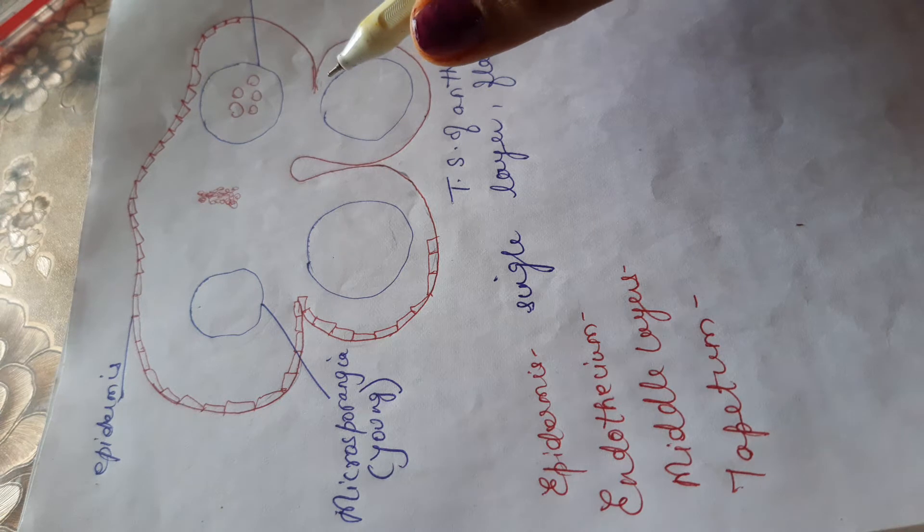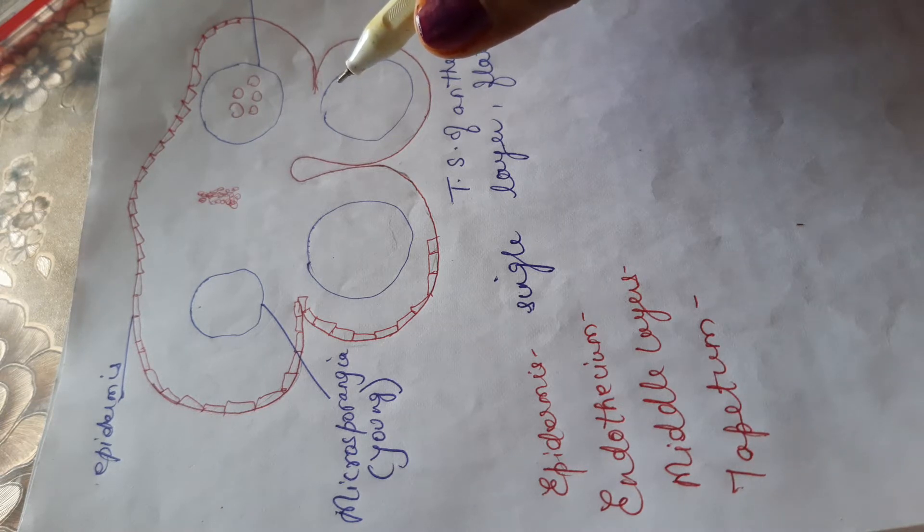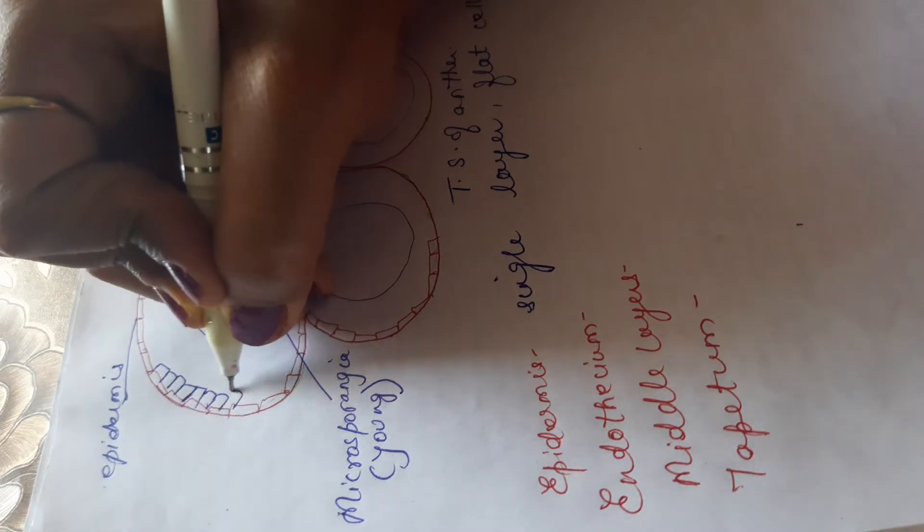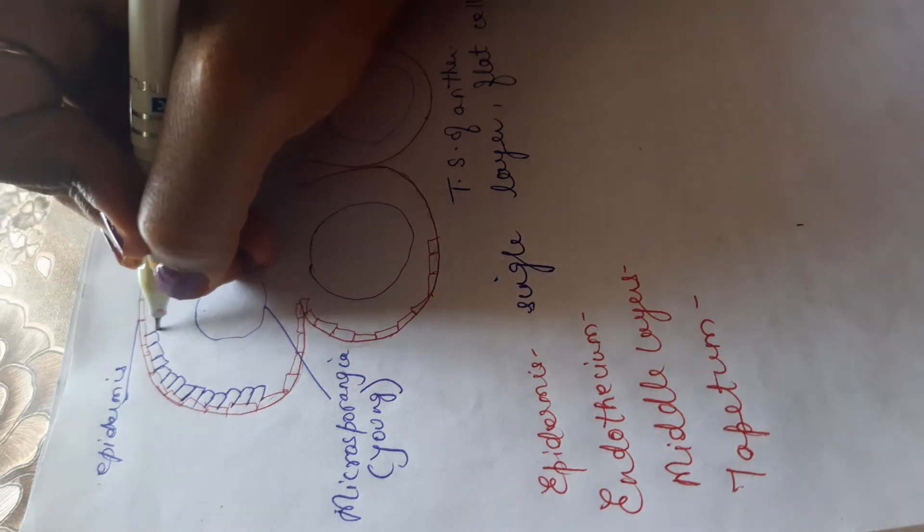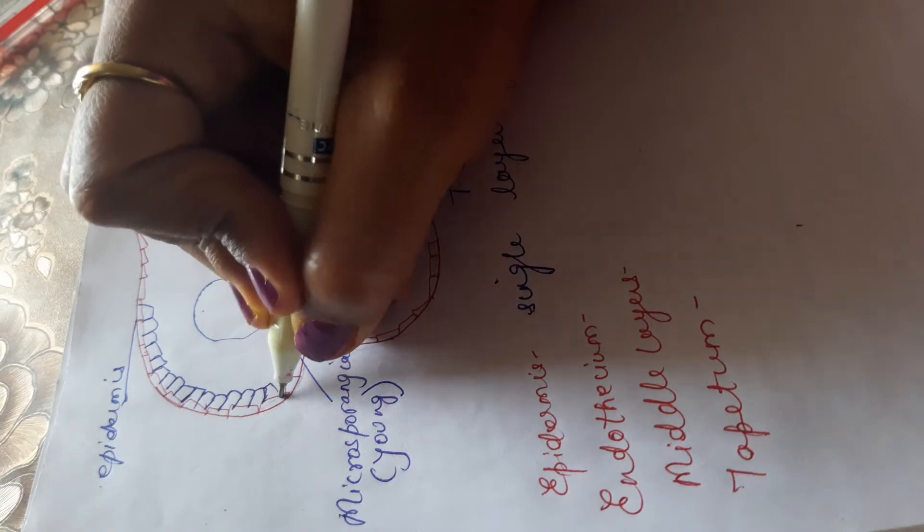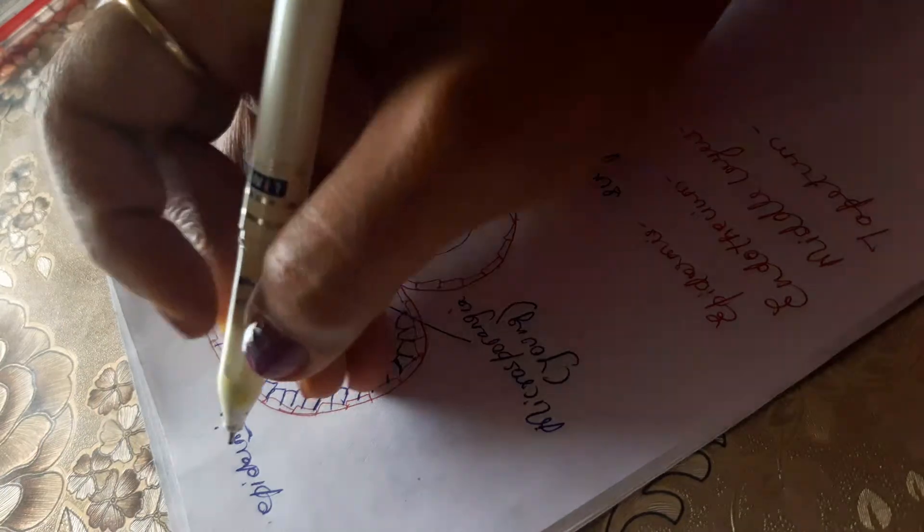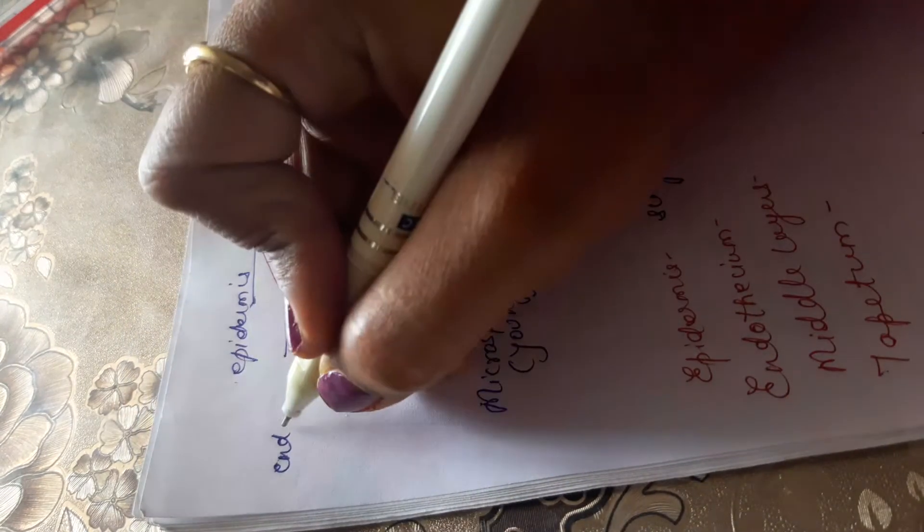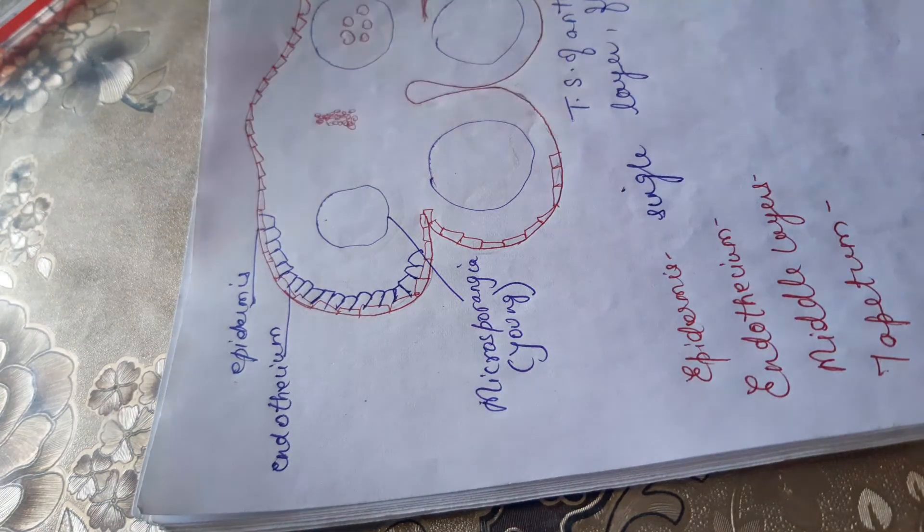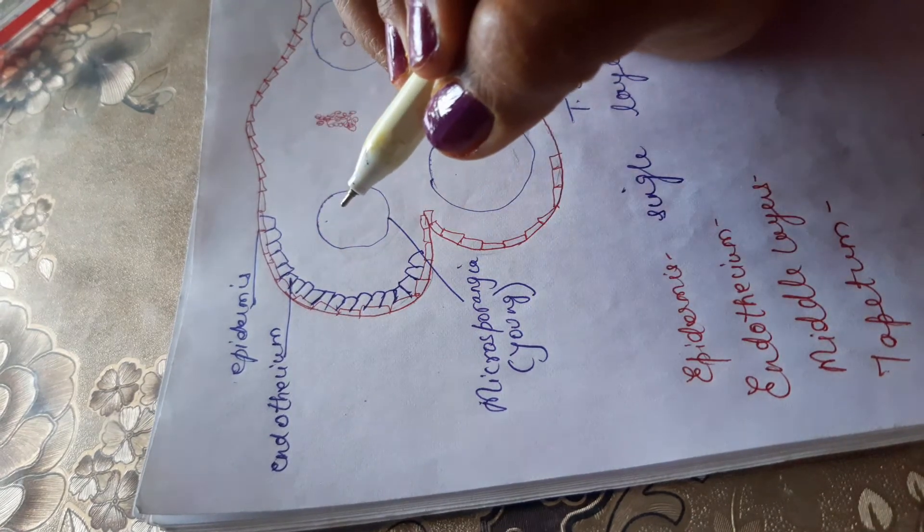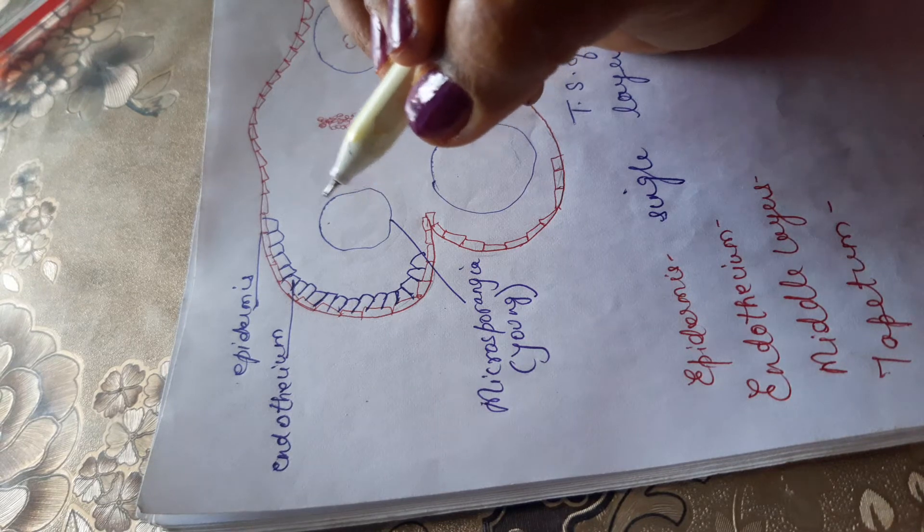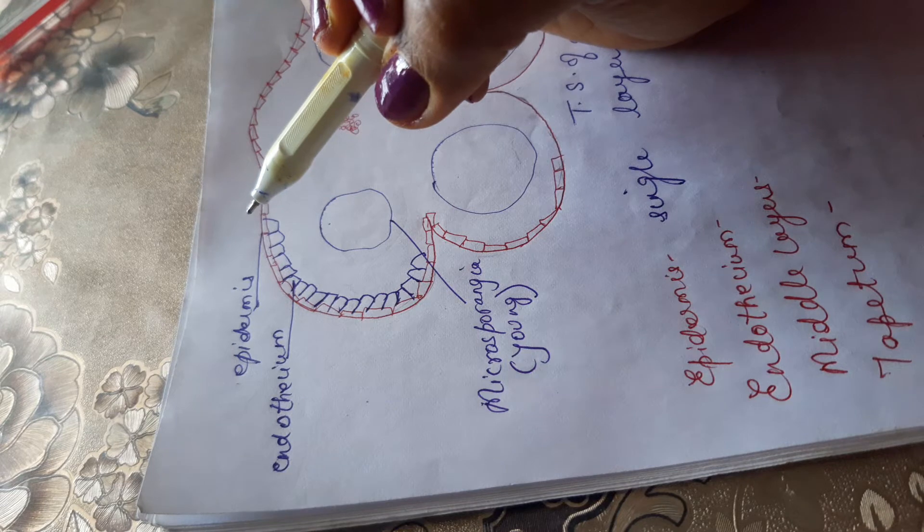After epidermis, which we have discussed, next is endothelium. Endothelium is a single layer and it is radially arranged. What is the function of endothelium? It helps in the dehiscence of anther.